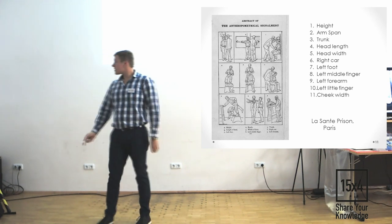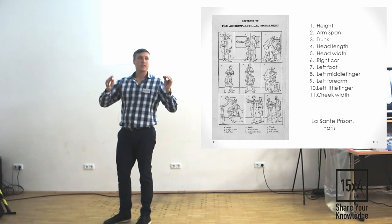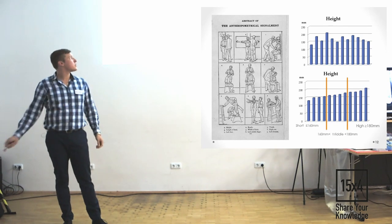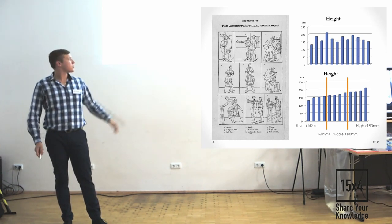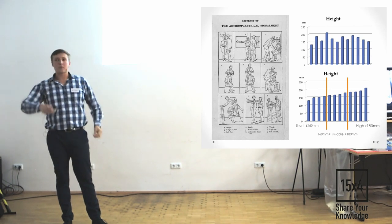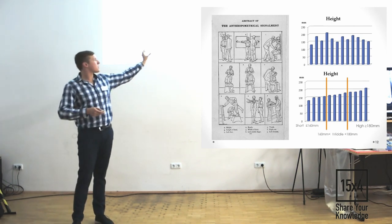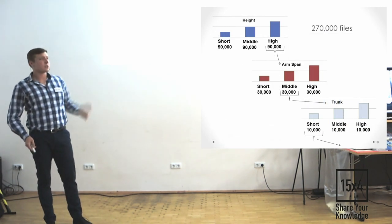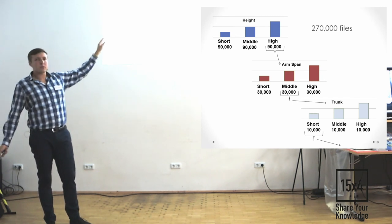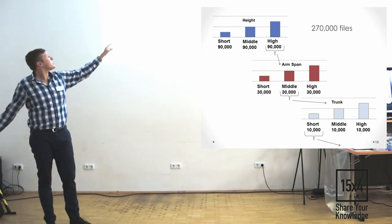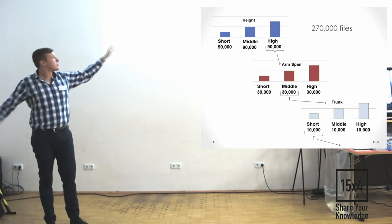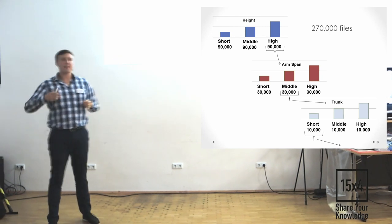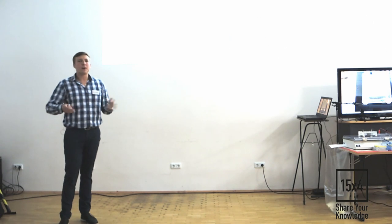How to systematize? He just took the first parameter, its height. Put it from the lowest, shortest one to the highest one. And split it in three equal groups. To the short, middle and high. Then he took the next parameter and in each group split it in three parts. For example, you have 270,000 index cards of criminals. We just split them in three groups. Each one is 90,000. When we take the next parameter, its arm span. Split it in three groups, now it's 30,000. The next parameter, trunk, etc. In the end, after 11 measurements, it's gonna be just a few files in one folder.